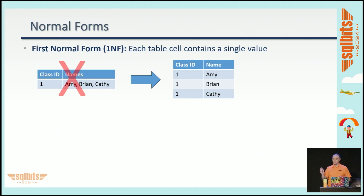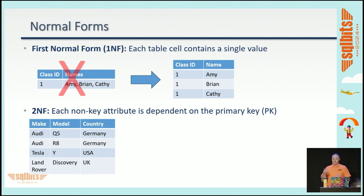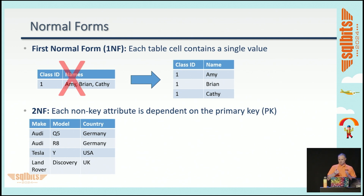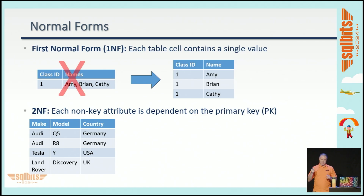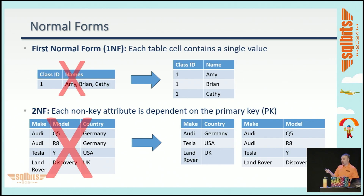The second normal form says each non-key attribute needs to be dependent on the primary key. Take a table with auto manufacturers, vehicle models, and the country they're headquartered in. The country doesn't really depend on the model — it depends on the make. So we split this into two tables: country is only dependent on the make, and the model also relates to the make separately. That eliminates the duplication of data we had previously.